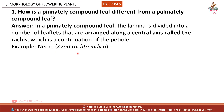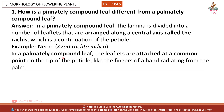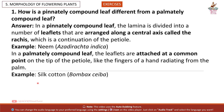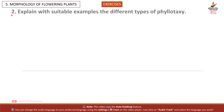Example: Neem (Azadirachta indica). In a palmately compound leaf, the leaflets are attached at a common point on the tip of the petiole, like the fingers of a hand radiating from the palm. Example: Silk cotton (Bombax ceiba).